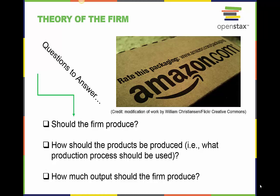In this next unit of the course, we will investigate how the firm answers the following questions regarding the production of goods and services. The first question is: should the firm produce? Ultimately, firms in a free market have the choice to start or stop production. They also have the ability to enter or exit a market altogether.